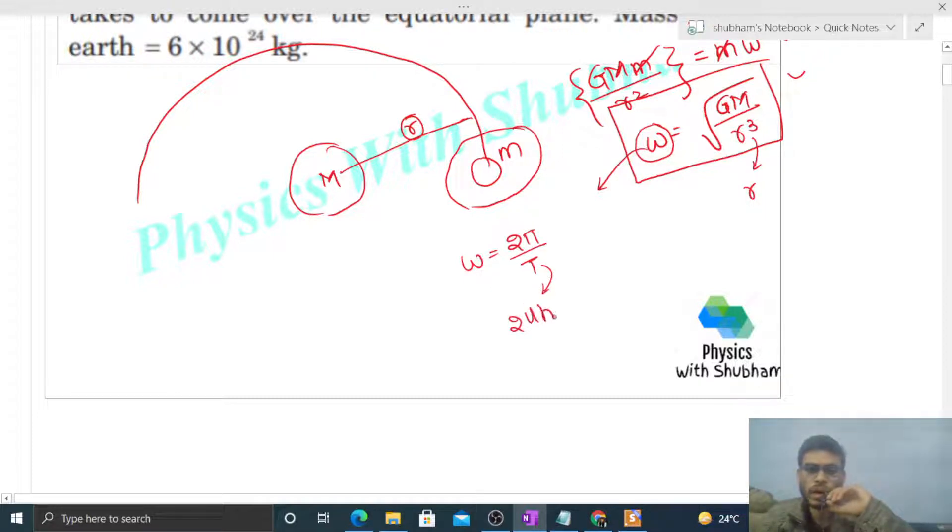Time period for Earth's rotation is 24 hours, so you can convert it to seconds - that is 24 times 60 in minutes, and multiply it with 60 to convert to seconds. Now we need to find r's value, so omega squared equals GM by r cubed. From here you can find out the value of small r, that is GM by omega squared, its power 1/3.